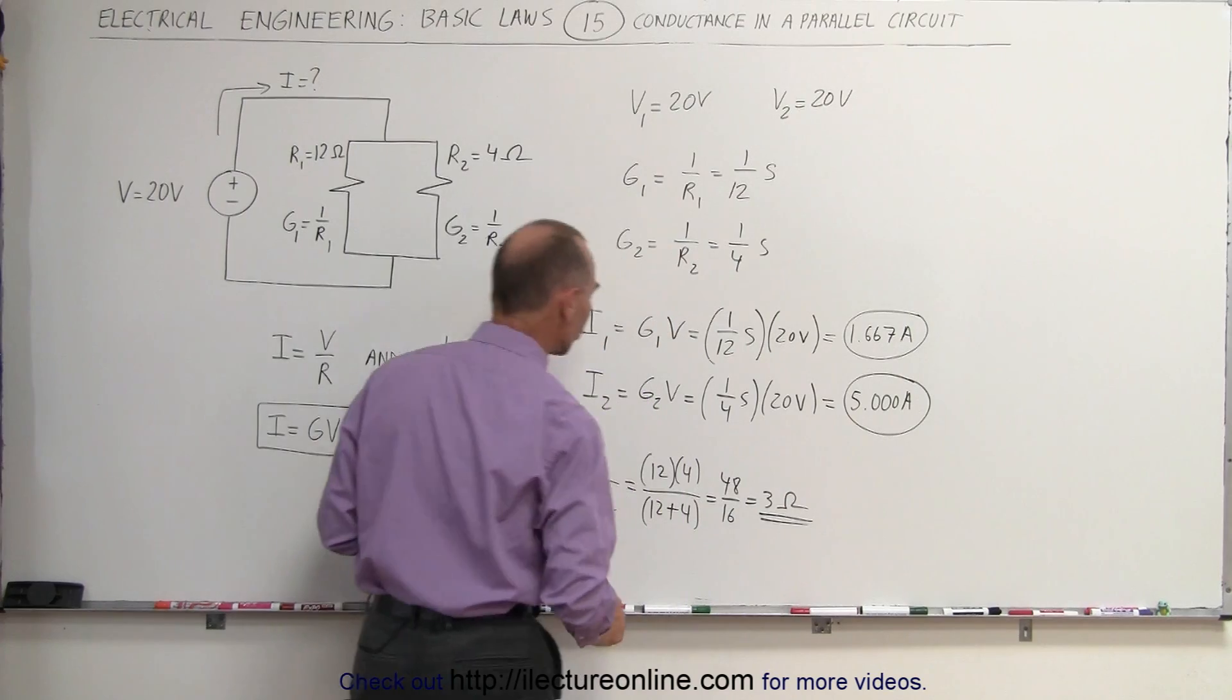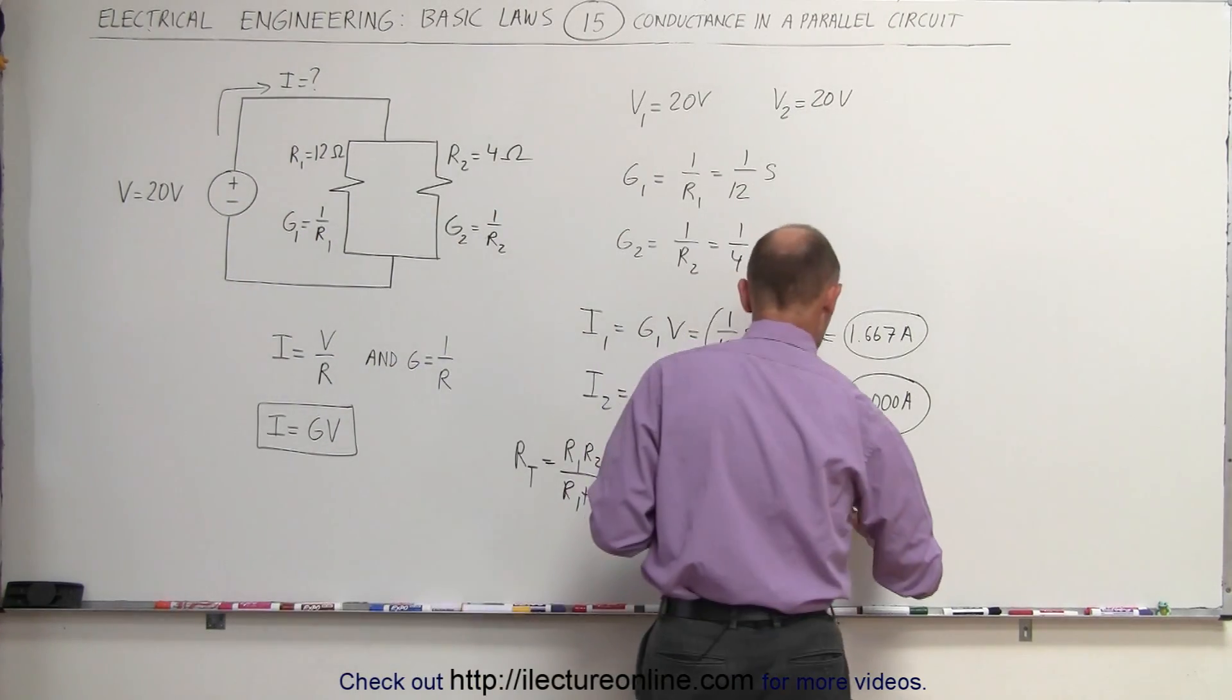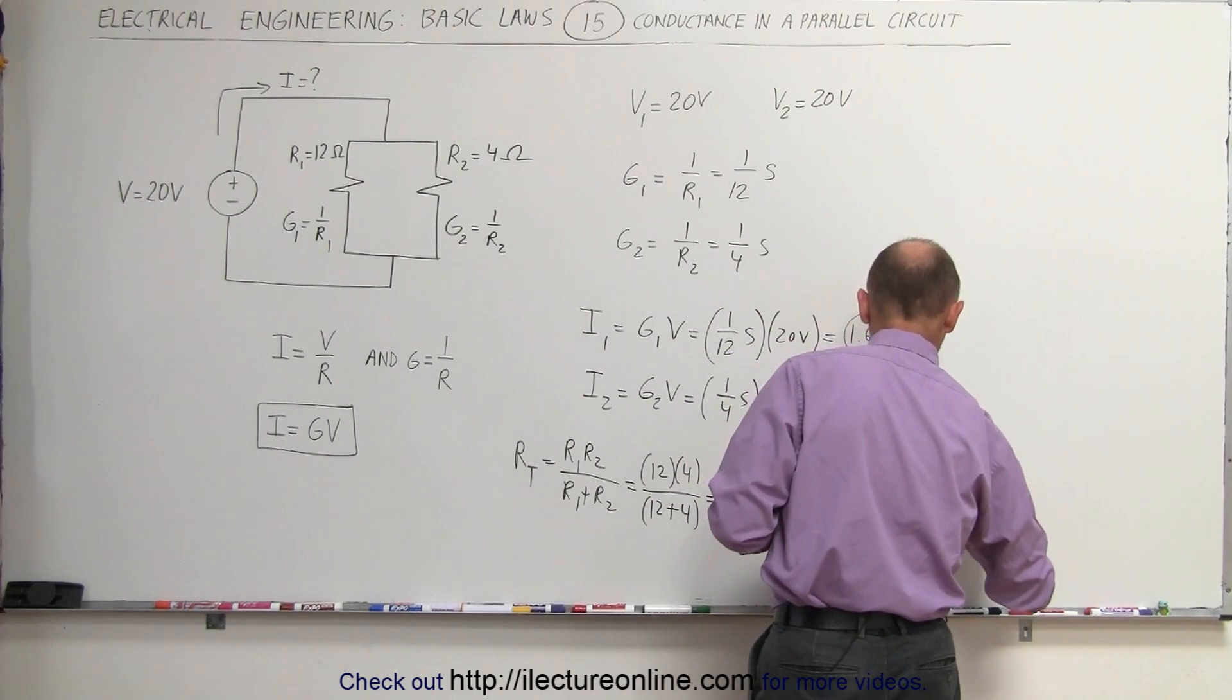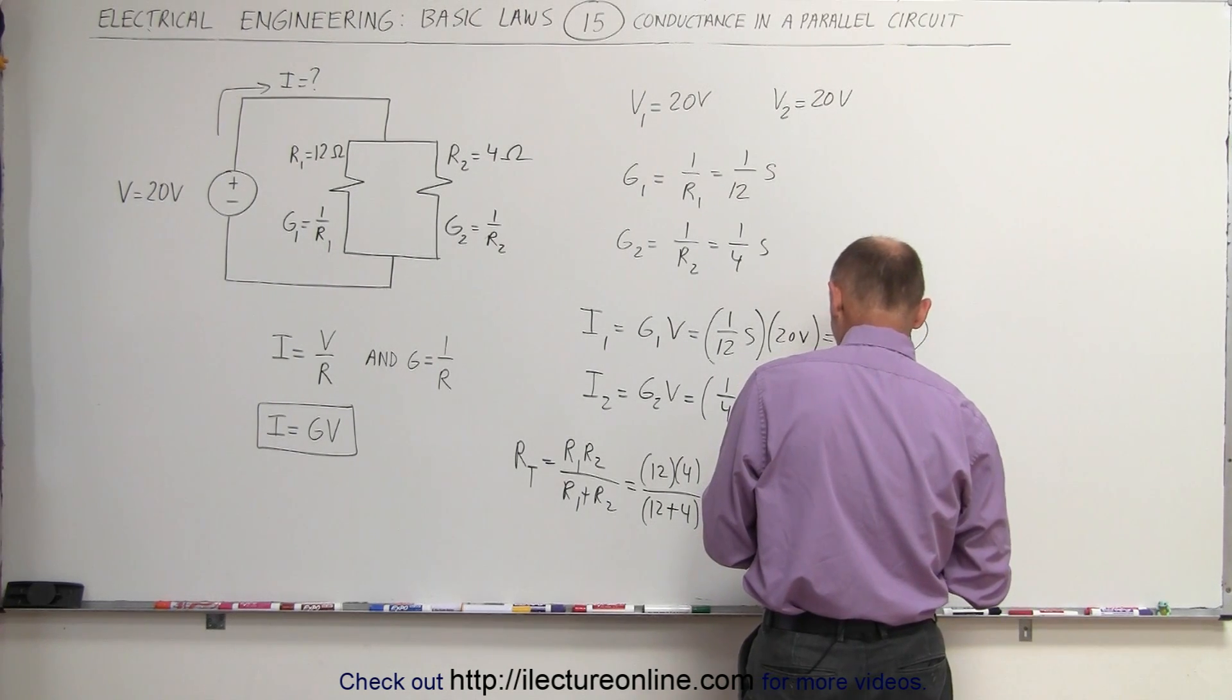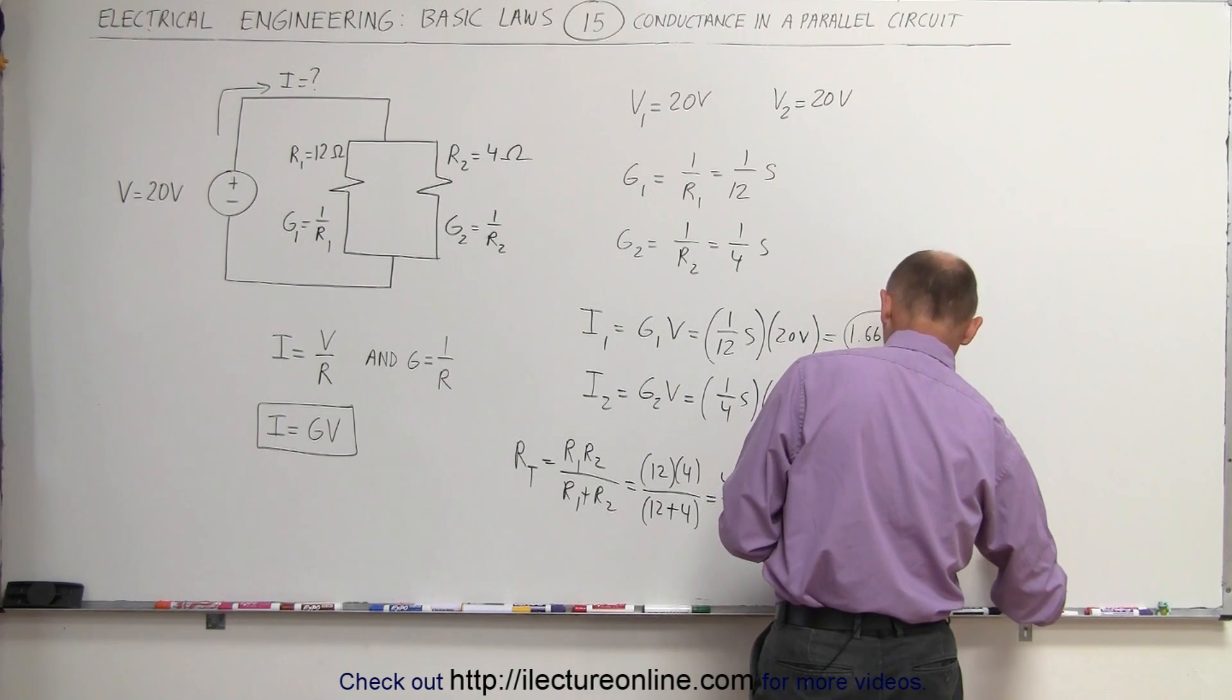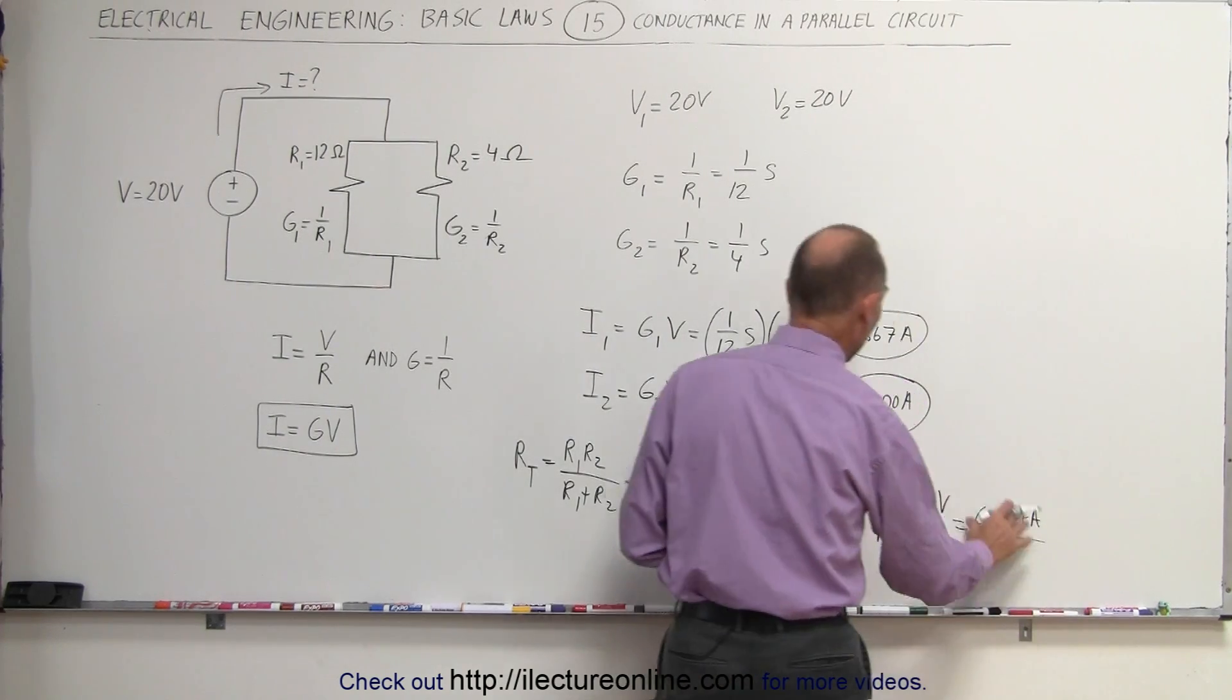So that's the equivalent or total resistance in the circuit. Now using Ohm's law, I is equal to V over R, the total voltage 20 volts, the total resistance 3 ohms, which is equal to 20 divided by 3 is 6.667 amps.